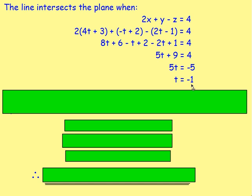Once you know that t = -1, how would you find out those coordinates of x, y, and z? How would you find that point of intersection?